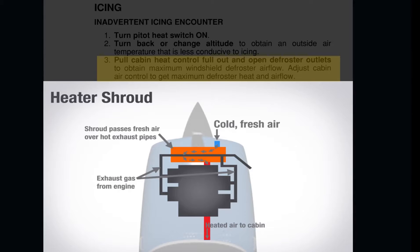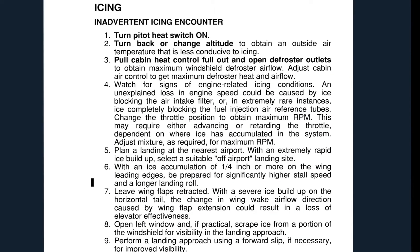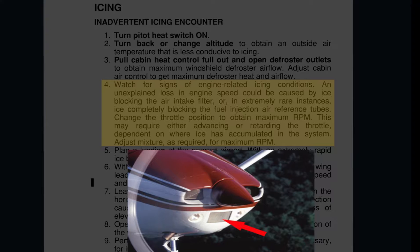Step 3 consists of using cabin heat and opening defroster outlets to try to obtain maximum windshield heated airflow that can eliminate and melt ice that might have formed on the windshield. As part of step 4, we will watch for signs of engine-related issues. Blockage of the air induction filter can lead to a 10% power loss if the engine is using air from the alternate door in the induction system.